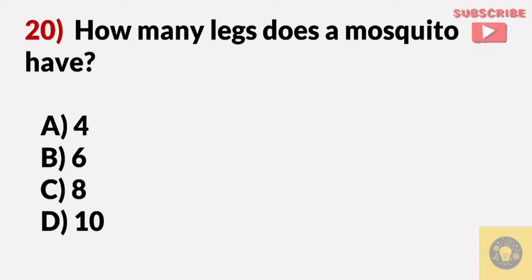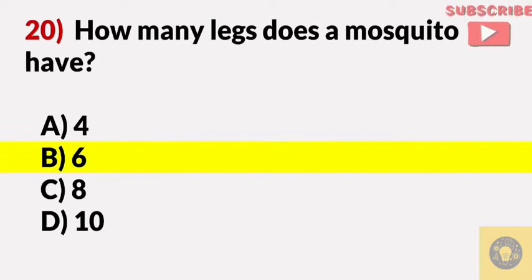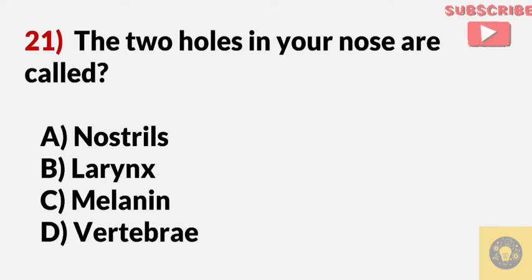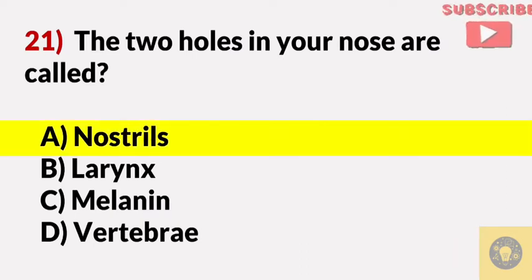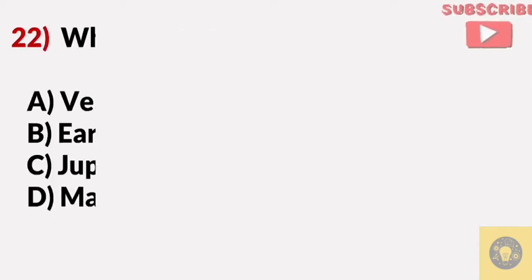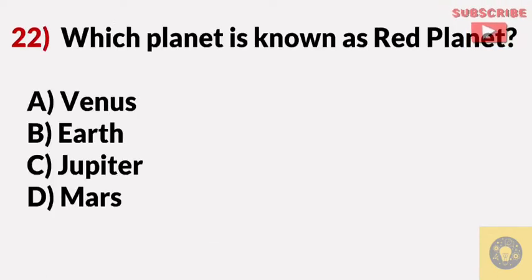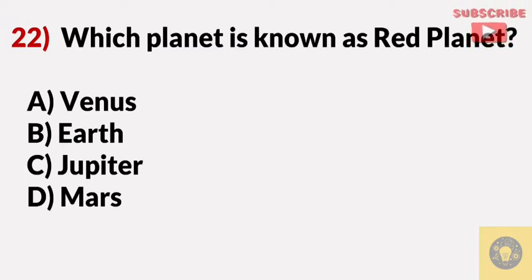How many legs does a mosquito have? Answer B, six. The two holes in your nose are called — Answer A, nostrils. Which planet is known as the red planet? Answer D, Mars.